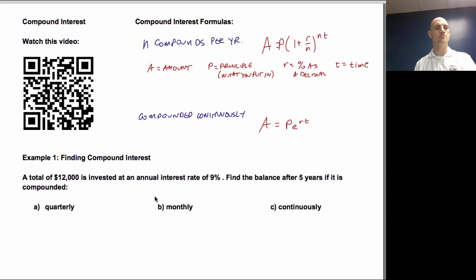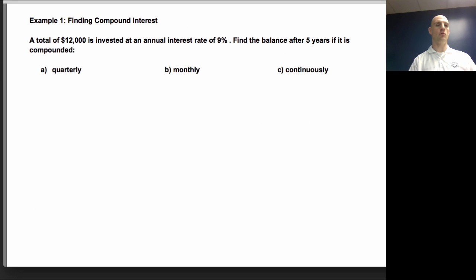So let's look at a couple of examples here. Let's look at example one. What we're going to look at here is using those formulas to try to figure out what I'm going to make and how much I'm going to end up with total. So a total of $12,000, so that's going to be my P because that's what's invested, at an annual interest rate of 9%, written as a decimal that would be .09. Just laying out all my pieces. Find the balance after five years, that's t, if it's compounded, and then they give us these stipulations.